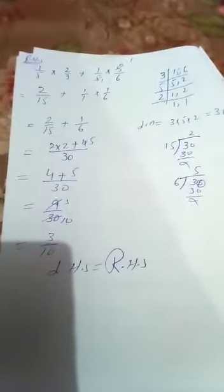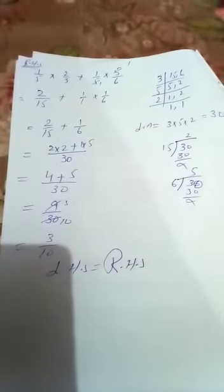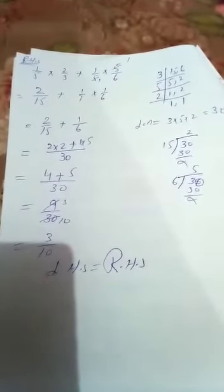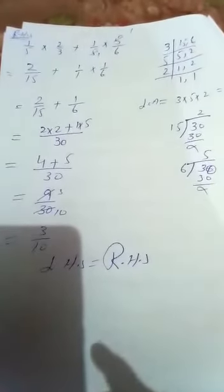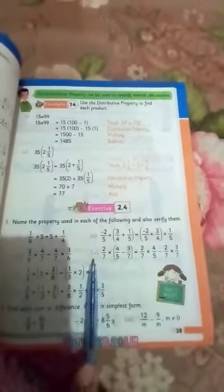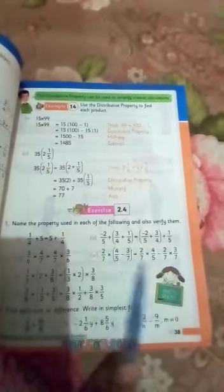Now students, you can solve the distributive property of rational numbers of multiplication over subtraction as well. Now open your exercise 2.4 page 38, question number 1, parts 2 and 4. You can solve it at your home in your rough copy.